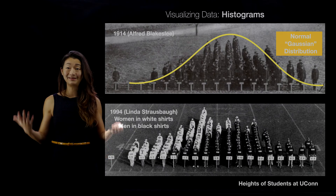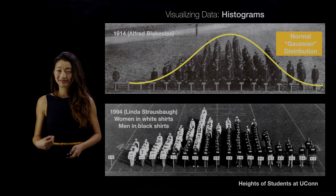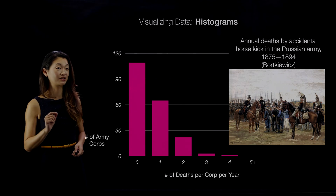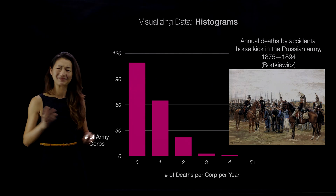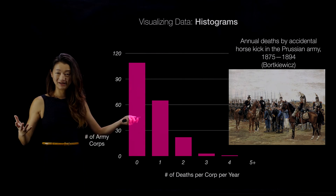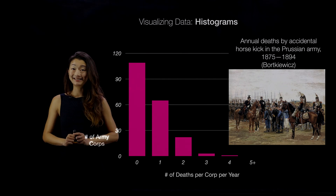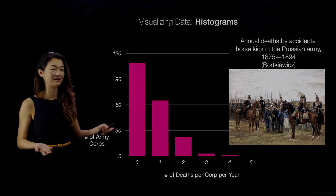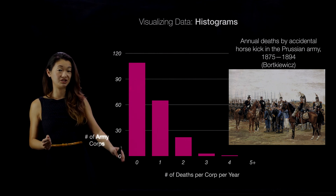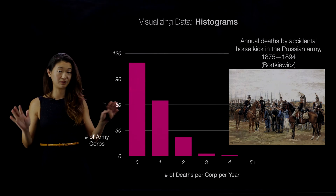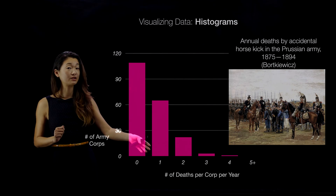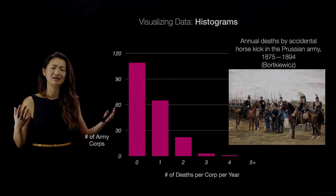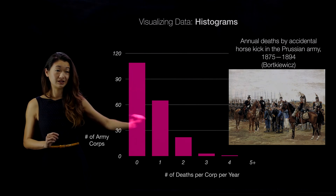Here's another even older example: the annual deaths by accidental horse kicks in the Prussian army in the 1800s. Back then, men were taking care of horses, and by accident every year, some soldier would get kicked in the chest by a horse and die. The vast majority of army corps had zero deaths that year, a smaller number had one person die, a smaller number still had two deaths, and mysteriously, one year in one army corps, four different individuals were kicked in the chest by a horse and died.